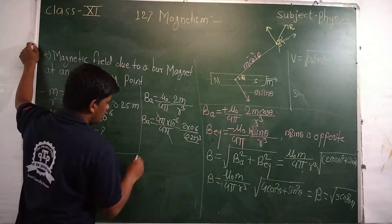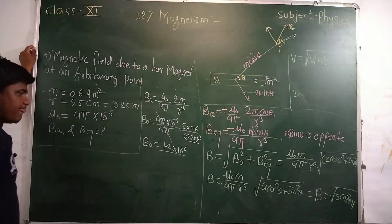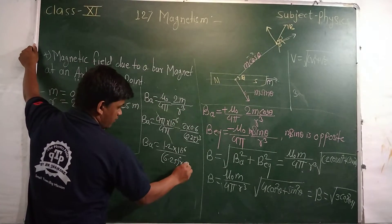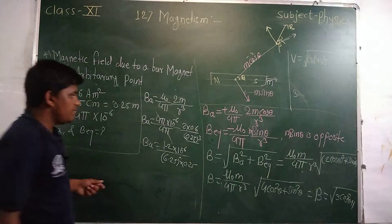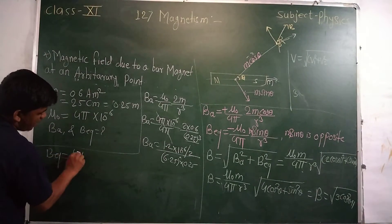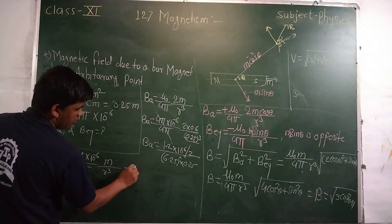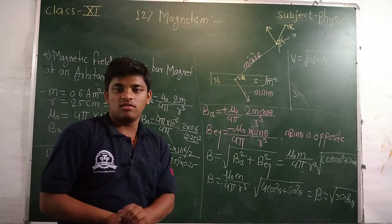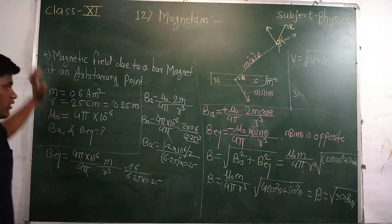The 4π cancels. Then 2 × 0.6 gives 1.2, so BA equals 1.2 × 10⁻⁶ divided by (0.25)³. The cube of 0.25 is approximately 0.015625. For the equatorial magnetic field BE, it equals mu₀ over 4π into M over r³, giving 4π × 10⁻⁶ over 4π into 0.6 divided by (0.25)³. Again 4π cancels, and we get BE equals 0.6 × 10⁻⁶ divided by 0.015625, which is the final answer for the magnetic field at the axis and equatorial point.